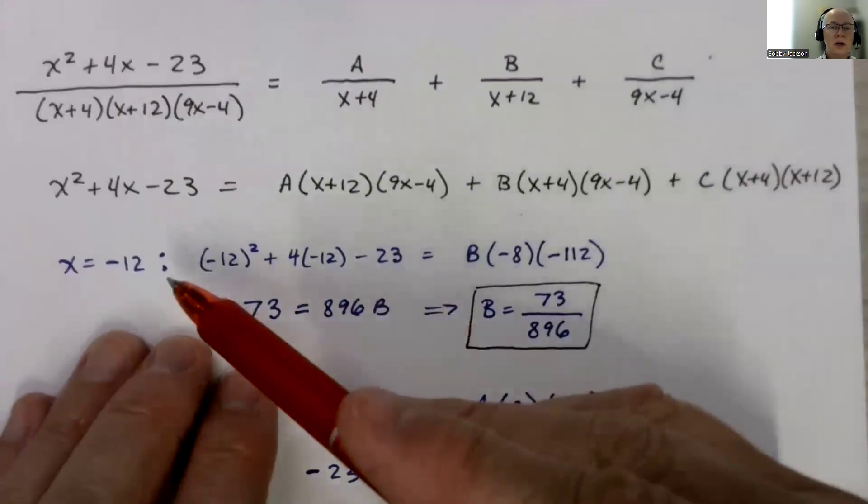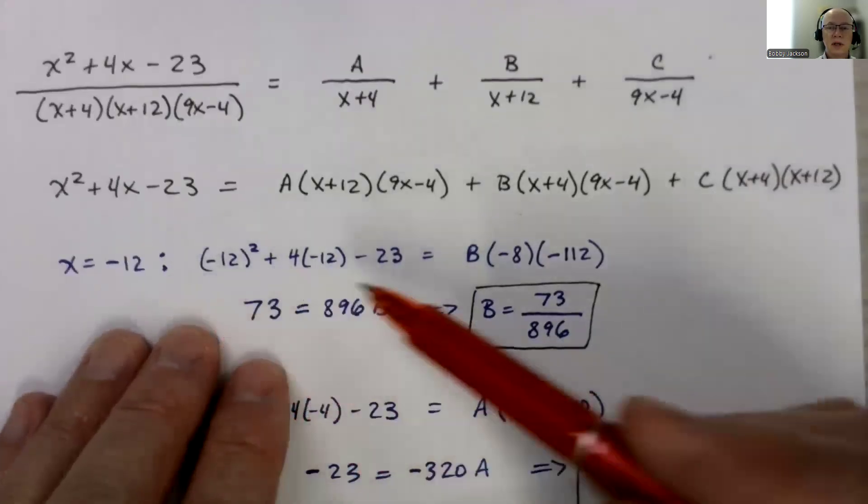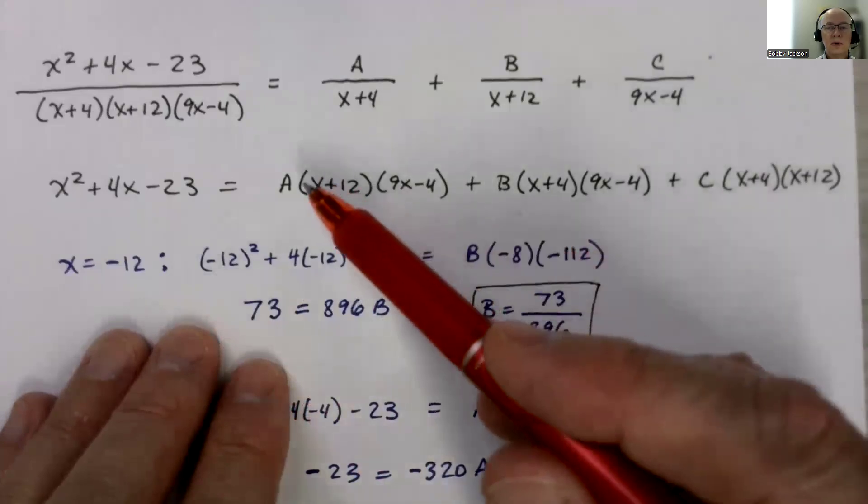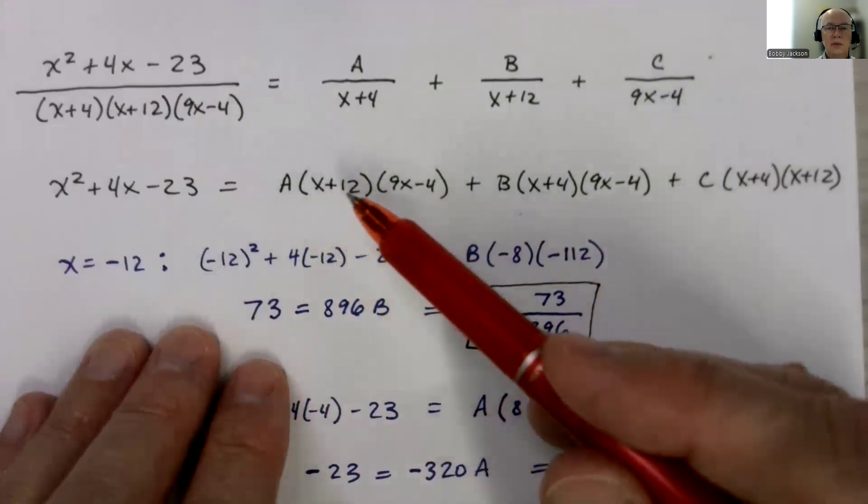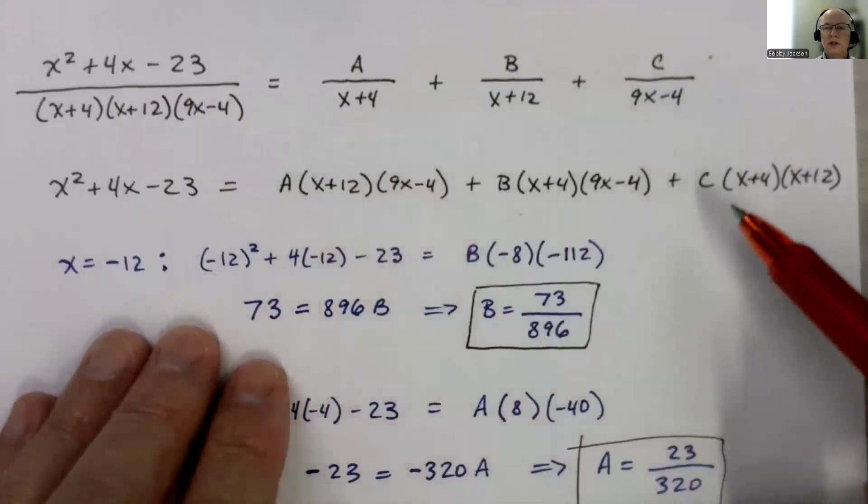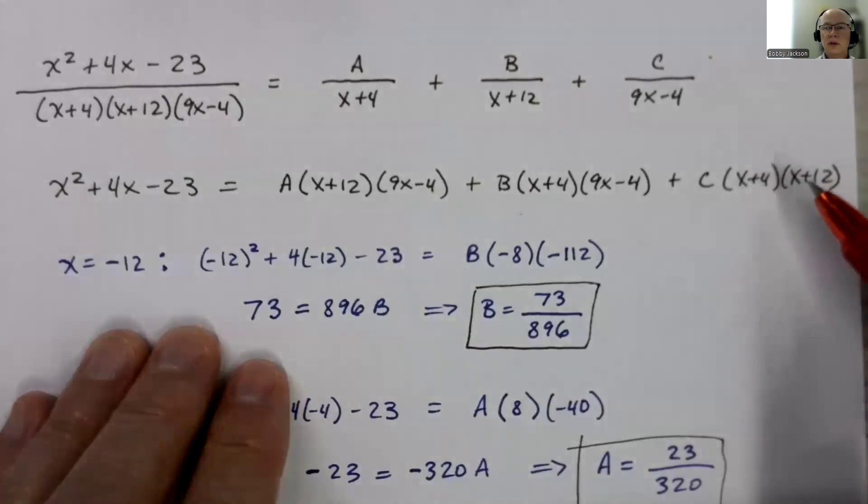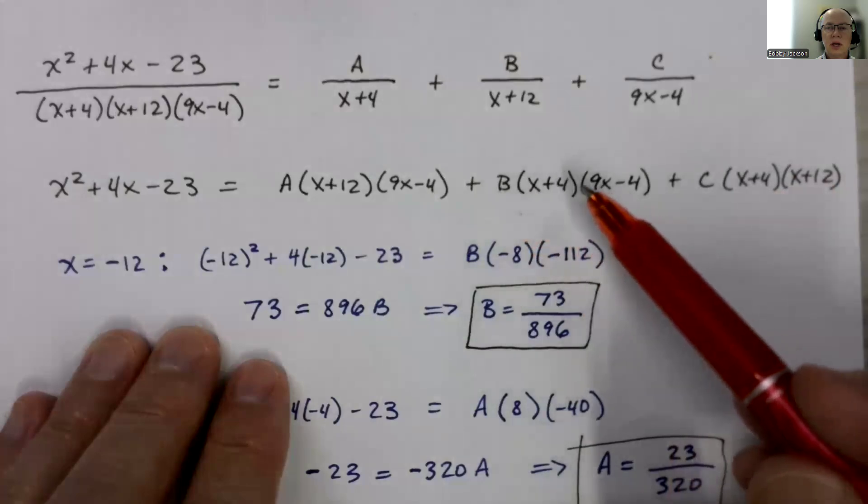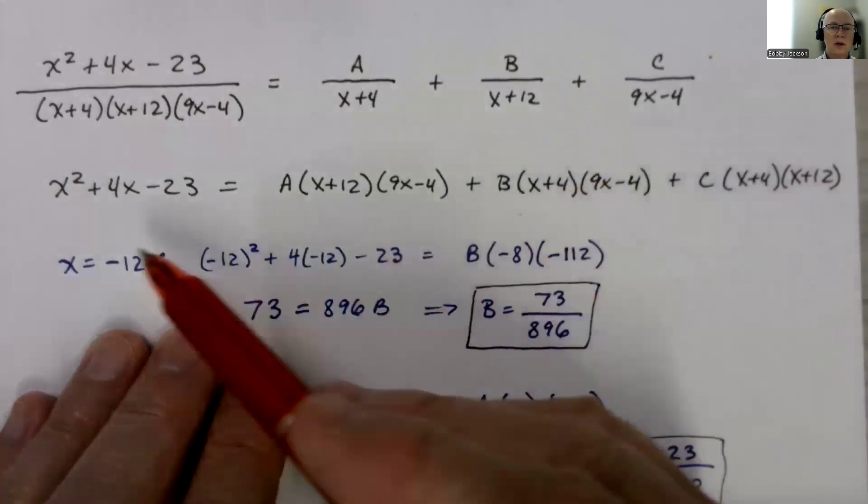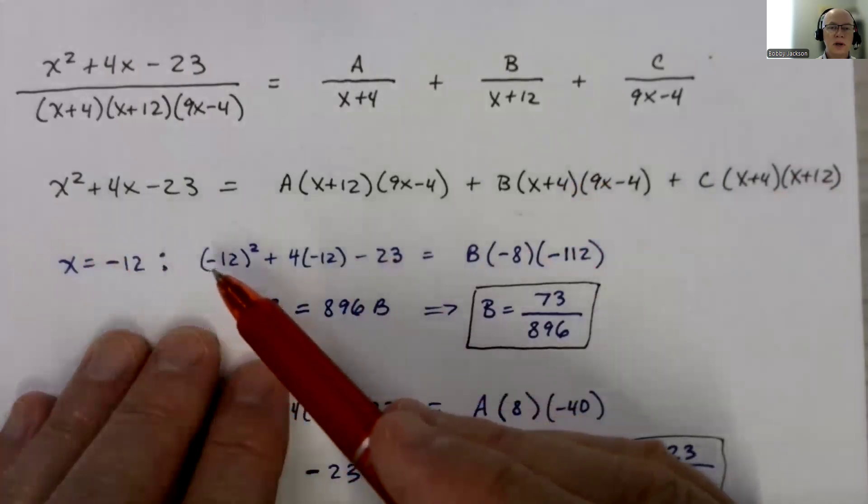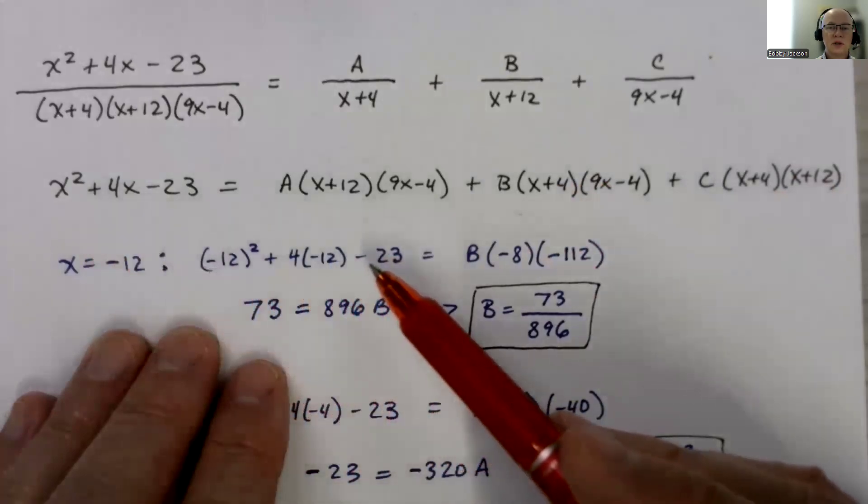So if I plug in negative 12, what happens? Notice over here, when I plug in negative 12, this will become 0, and A times 0 is just going to be 0. This whole term will be 0. Same here. Plugging in negative 12 here gives me 0, so this whole thing is 0. The only thing that will be left is the B, and we have to figure out what the coefficient will be. And we can solve for B. Over on this side, plugging in negative 12 gives me this expression, which is equal to 73.